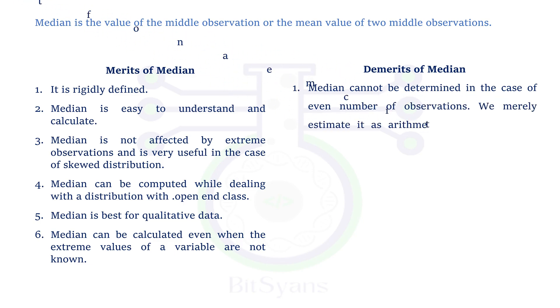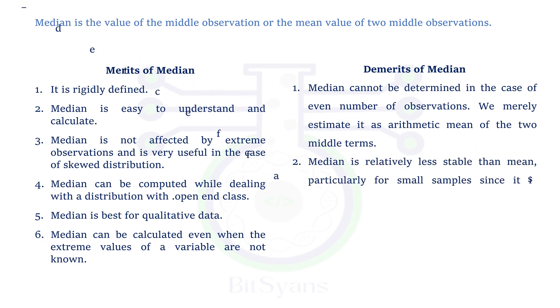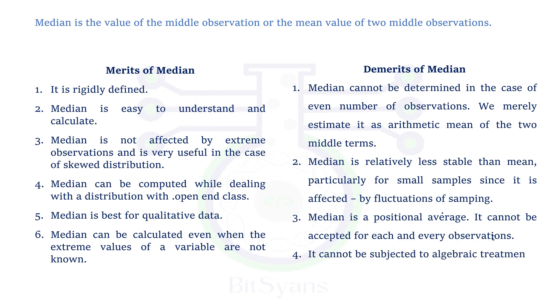However, when we talk about the demerits of the median, it cannot be determined in the case of even number of observation. We merely estimate it as an automatic mean of the two middle terms. Median is relatively less stable than mean. And it is also positional average. It cannot be accepted for each and every observation. And also, it cannot be subjected to algebraic treatment.